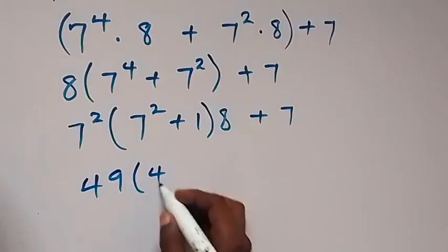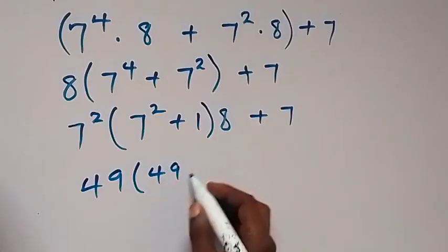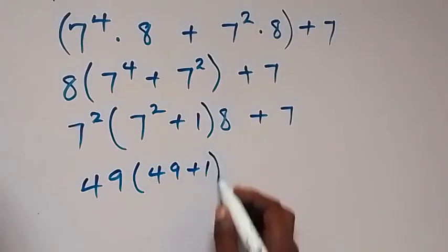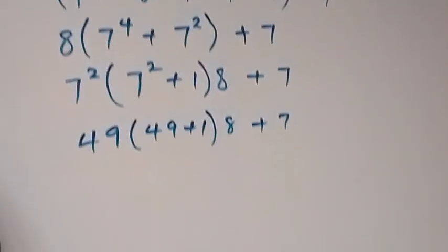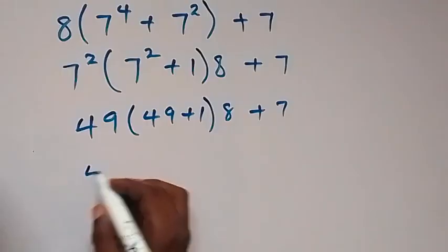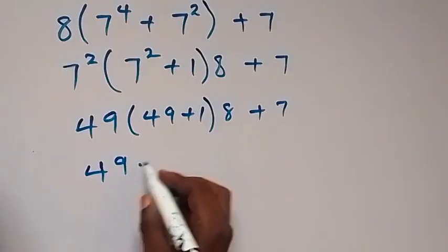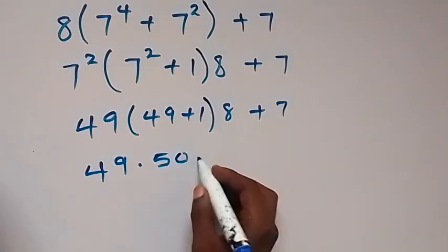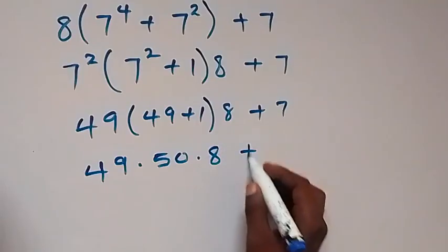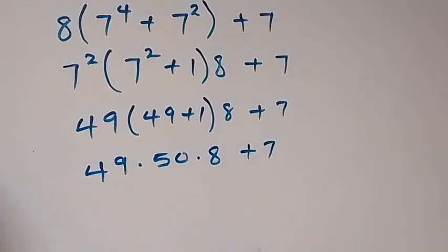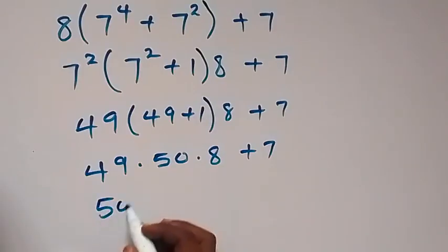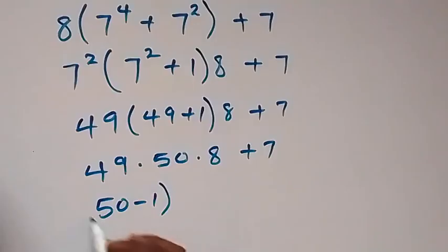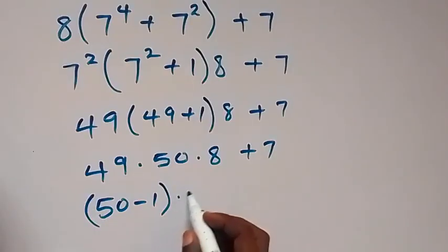7 squared is 7 times 7, that's 49. Also we have 49 plus 1, then 50 times 8 plus 7. We can write 49 as 50 minus 1, then times 50.